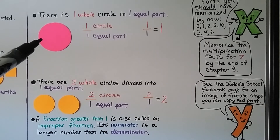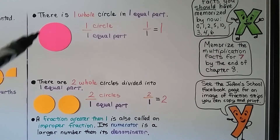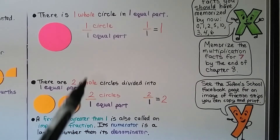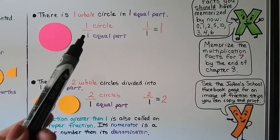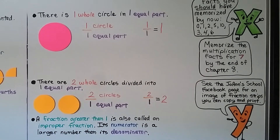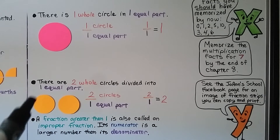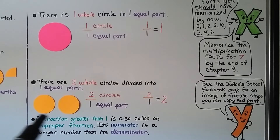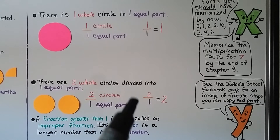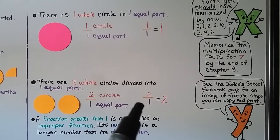Here we have this pink circle — it's a whole circle, and it's not split up at all. It's just one whole equal part. Our numerator would be one, our denominator would be one. We have the same numerator and denominator, so the whole thing is equal to one whole. Now we have two whole circles divided into one equal part. We have two circles that each have one equal part, so our numerator is two, our denominator is one, and it's equal to two whole. A fraction greater than one is also called an improper fraction.